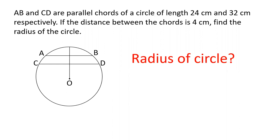Friends, today I have two parallel chords AB and CD. The length is 24 and 32. The distance is 4 cm and we have to find out the radius of the circle.